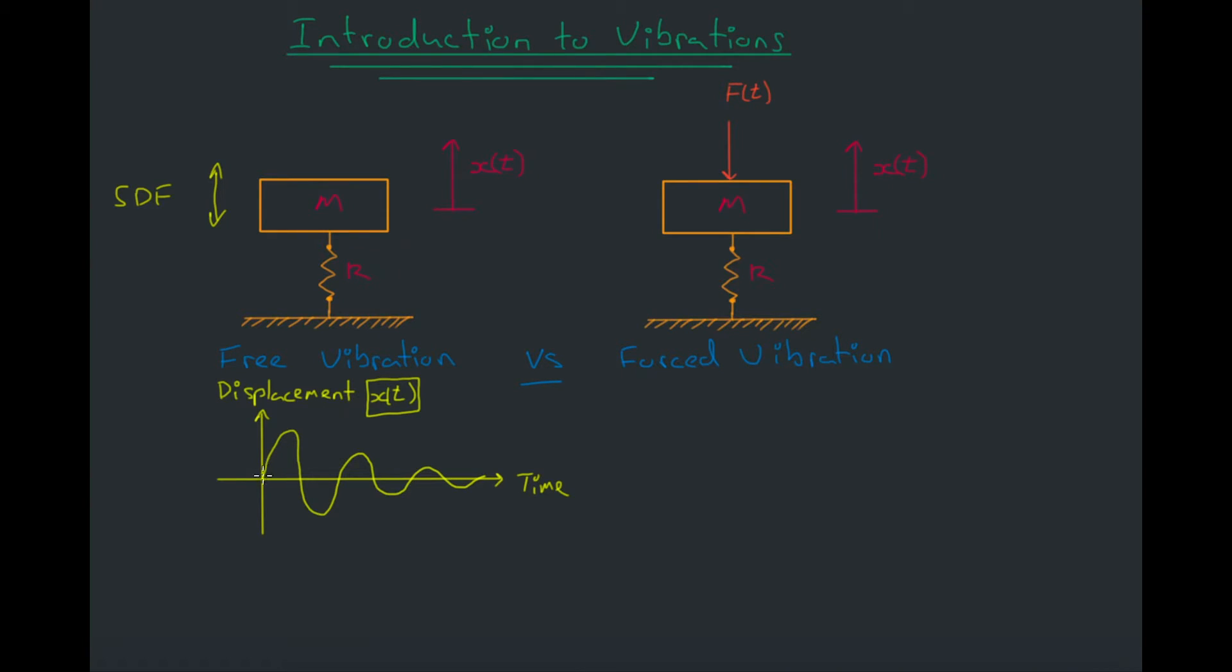So we can apply an impulse at time equals zero, and then after that we're in free vibration. What happens when we flick this mass or apply an impulse to it? I've just drawn a little quick sketch of what would happen to the system if we flicked it or applied an impulse.